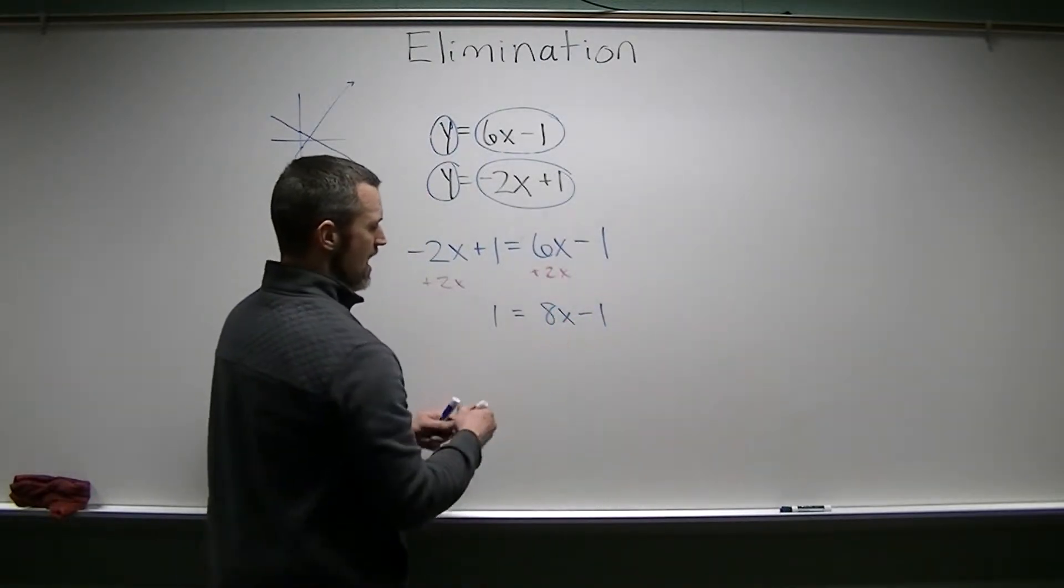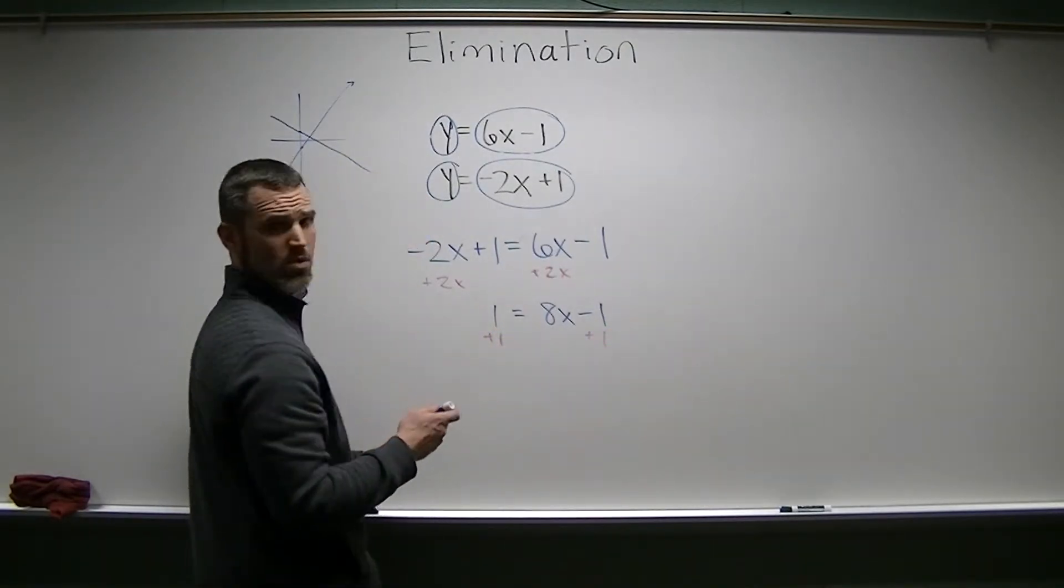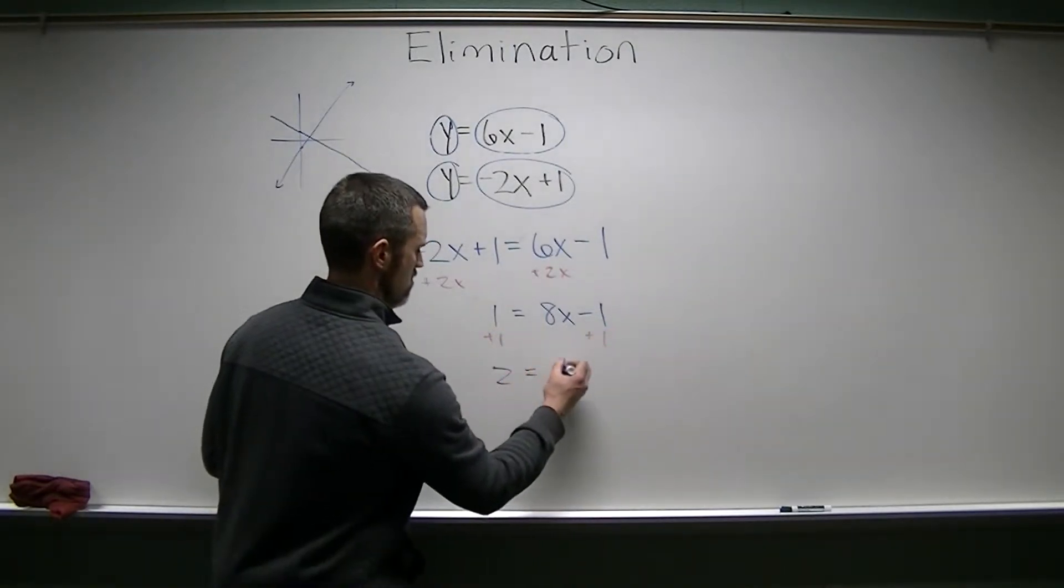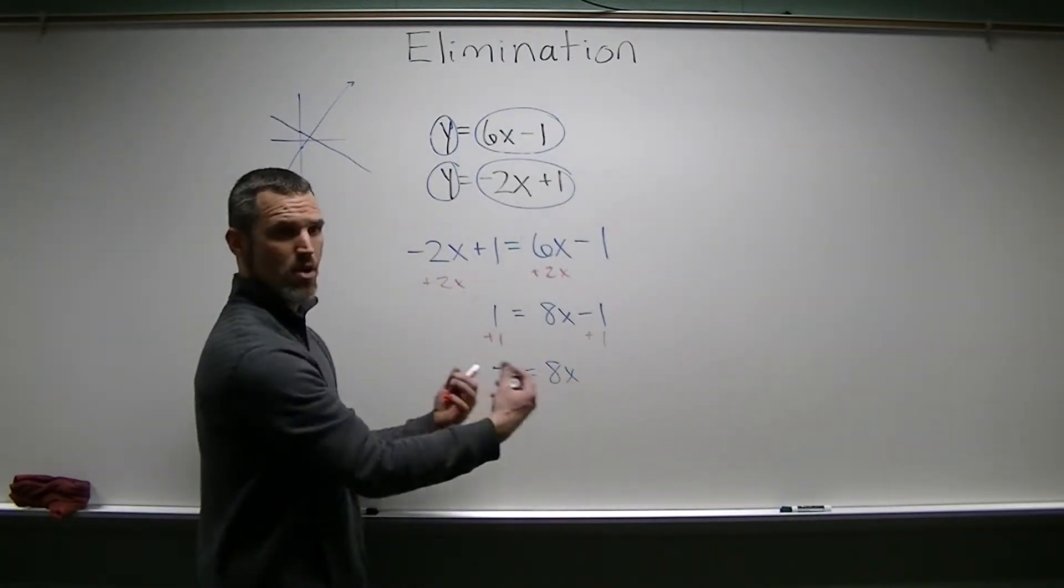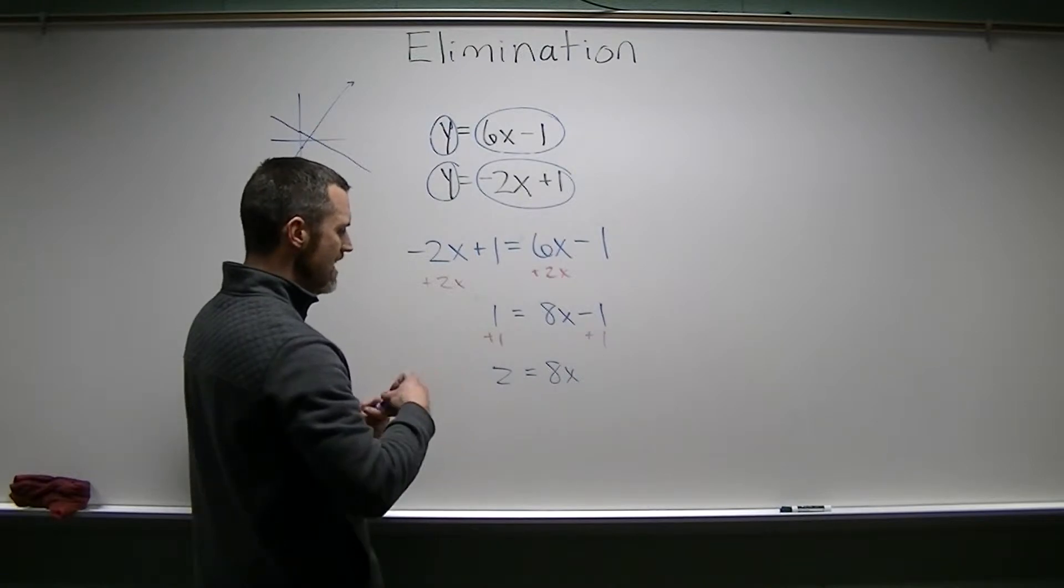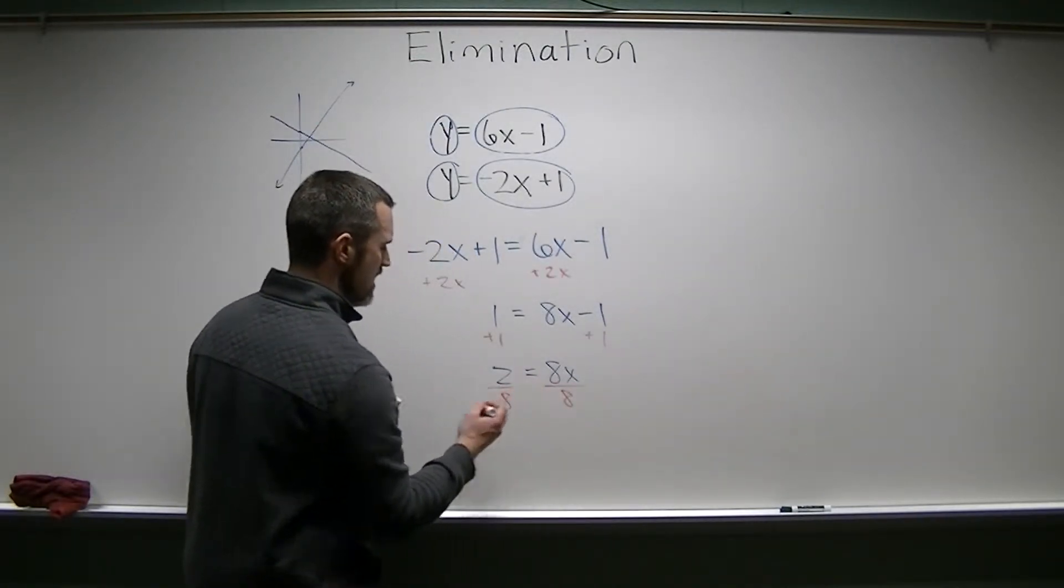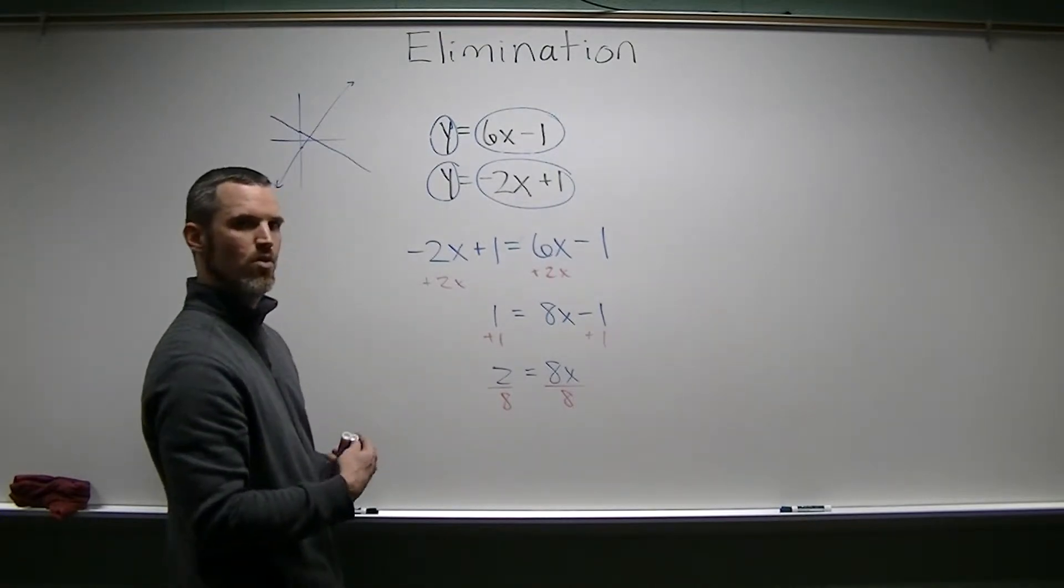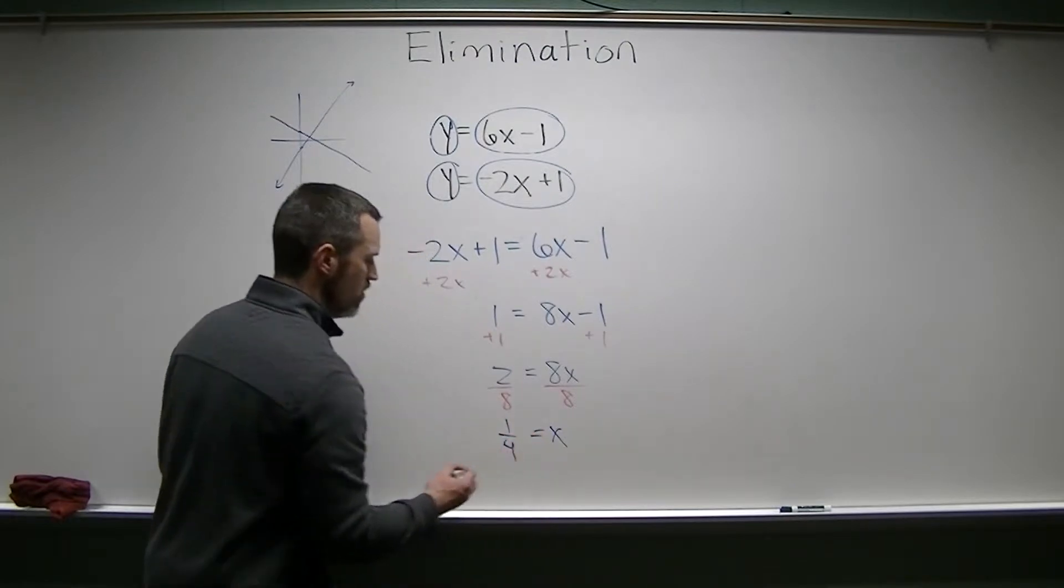And then I need to get rid of that 1, so I'm going to add 1 to both sides, and we're going to get 8x equals 2. It's got to be a fraction. I've got to get rid of that 8, divide by 8. So I'm going to go ahead and divide both sides by 8, and that I could reduce to 1 quarter. So we get x equals 1 quarter.